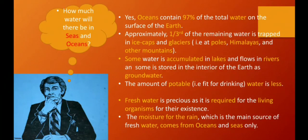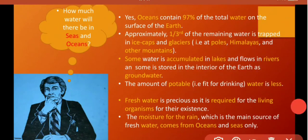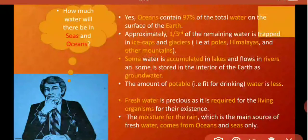Now students, the question is how much water will there be in seas and oceans? The answer is oceans contain 97% of total water on the surface of the earth.